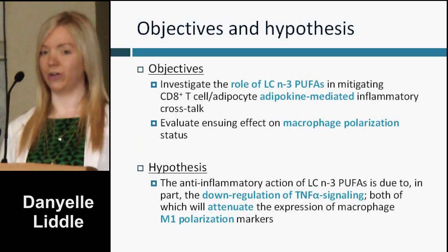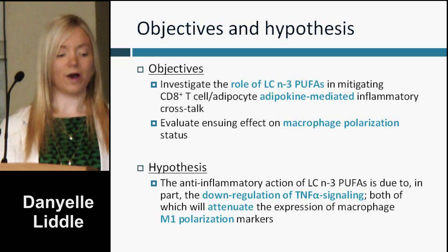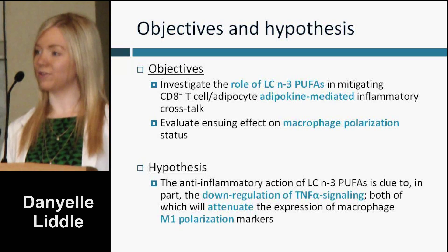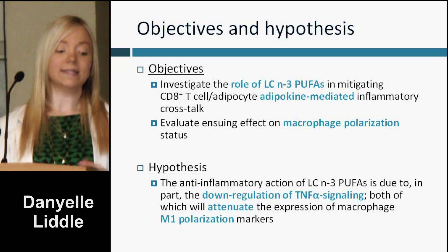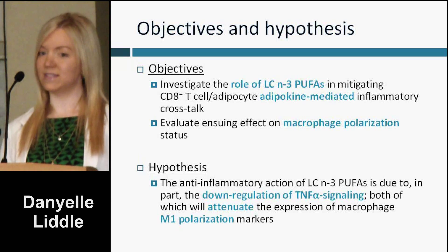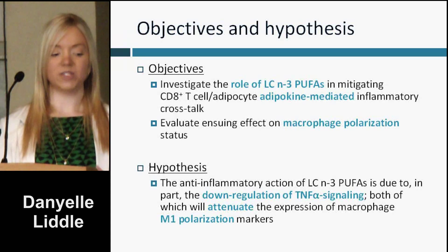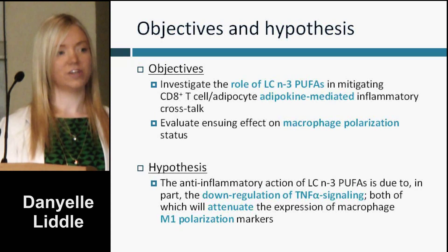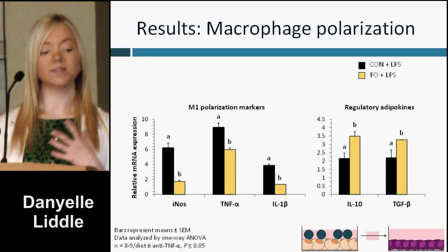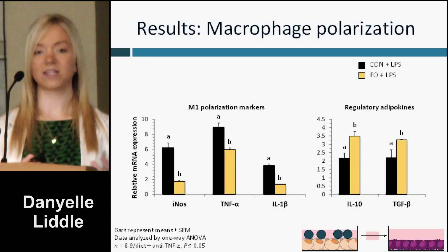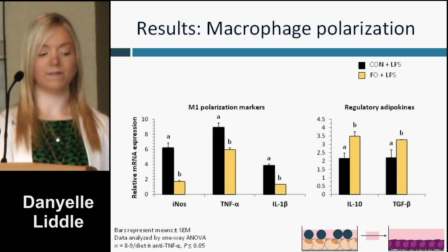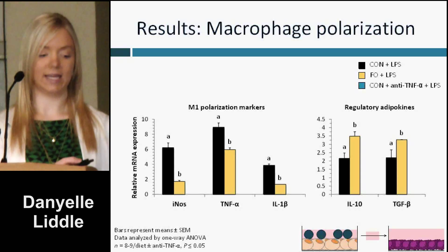Our lab is tasked with trying to better understand the key players that contribute to the early processes in obesity in hopes of one day mitigating the downstream complications. My project in particular focuses on the role of tumor necrosis factor alpha, which signals through its cell membrane receptor to its downstream intermediates, which impair normal insulin signaling, and therefore normal adipocyte and adipose tissue function.